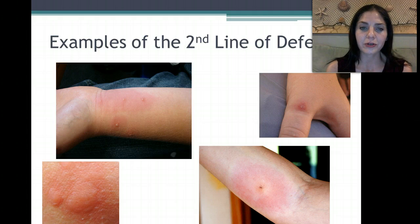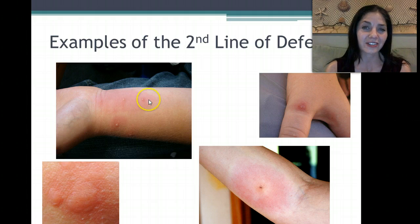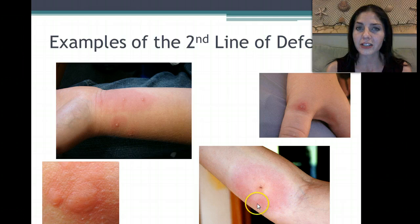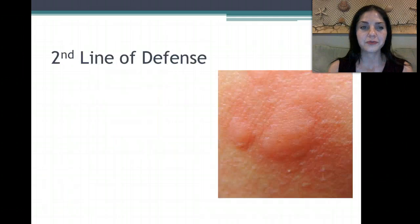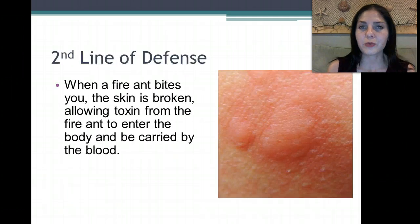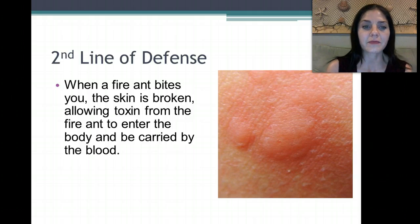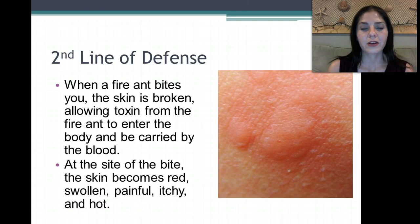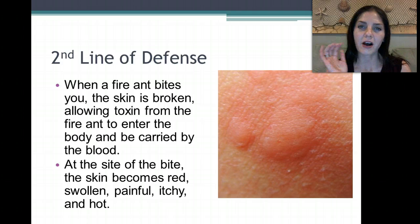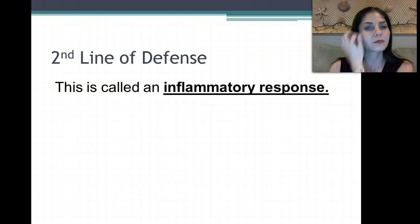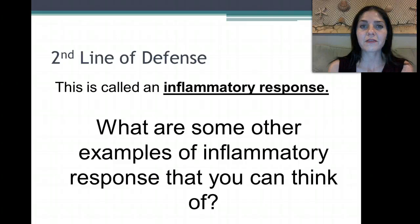These are examples of inflammatory responses. If we get bites, we get pustules — little things filled with pus — we get redness, swelling, it's hot to the touch, and it hurts. For example, if we get bit by a fire ant, the skin is broken, and that allows the toxin from the ant to get into your skin. That toxin is then carried to your body through your blood. At the site of the bite, the skin becomes swollen, red, and a lot of times hot or warm to the touch. That's called the inflammatory response.